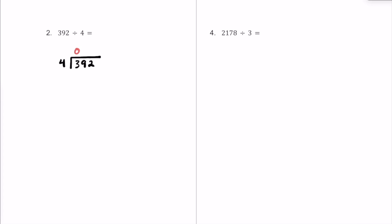Let's see how many times 4 fits into 39. I know 4 times 10 is 40, so that's too much. So 4 times 9 is 36. I'm going to put a 9 here — that's the most times we can fit in without going over. So 39 minus 36: 9 minus 6 is 3, and 3 minus 3 is 0.